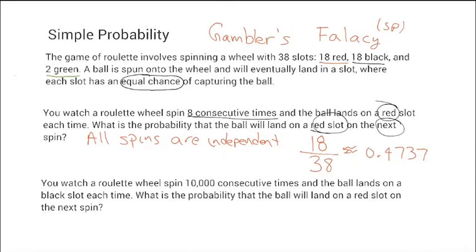You watch the roulette wheel spin 10,000 times and it landed on black every single one of those times. What is the probability it will land on red next? The gambler's fallacy says that if it got black 10,000 times in a row, it's going to get black next time — but that's a fallacy, because we have an equal chance of each slot capturing the ball. The number of reds divided by the total gives me the same probability every time.